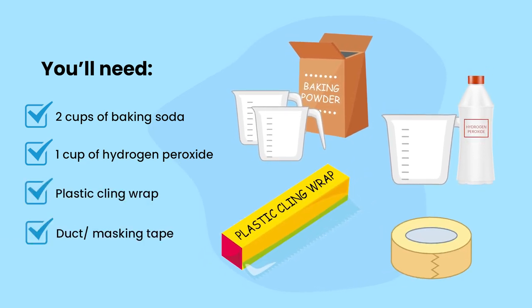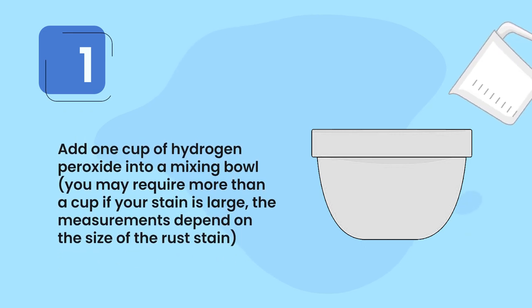Follow the procedure. Step one: add one cup of hydrogen peroxide into a mixing bowl. You may require more than a cup if your stain is large. The measurements depend on the size of the rust stain.